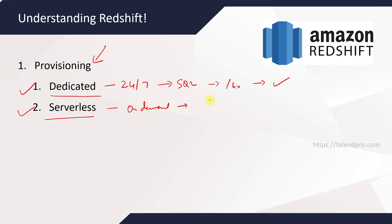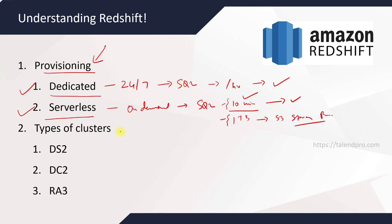For example, if you are running a SQL query and it runs for 10 minutes, you'll be charged only for those 10 minutes. The compute will be charged based on that 10 minutes of computing. When it comes to the types of clusters, there are three different types. The first one is Dense Storage.